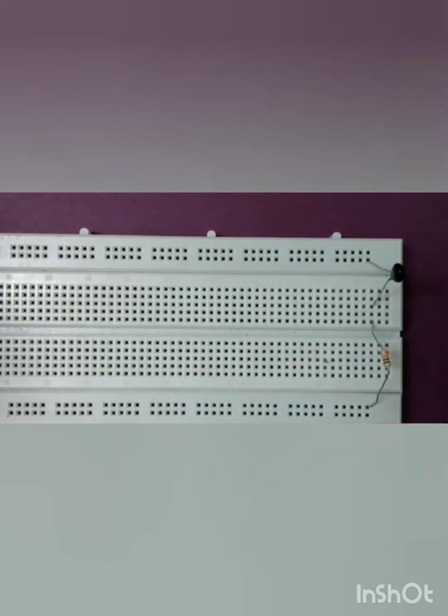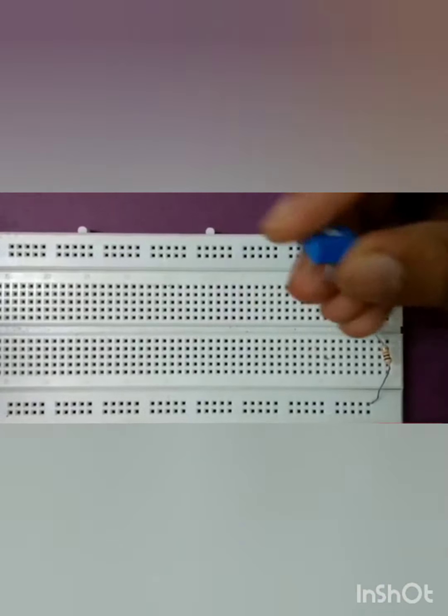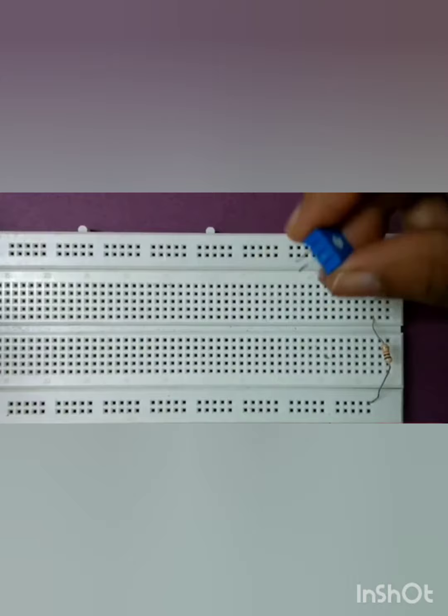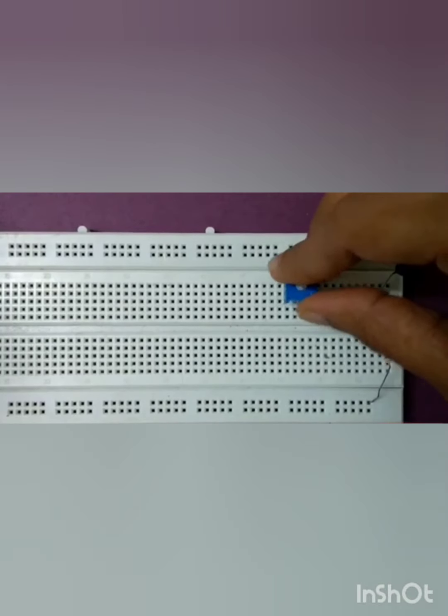Then we will place a 10K preset. A preset has three terminals which is numbered as pin number 1, 2 and 3. The preset is also known as wiper.